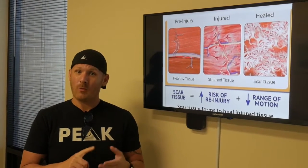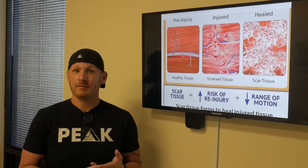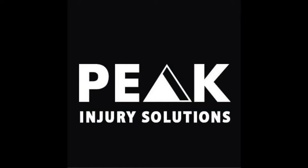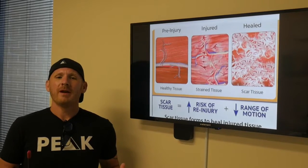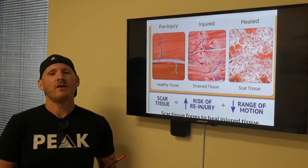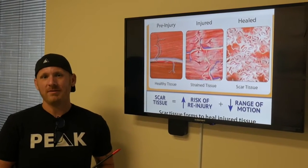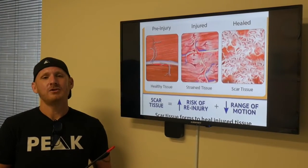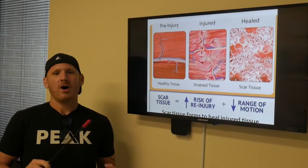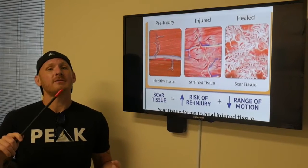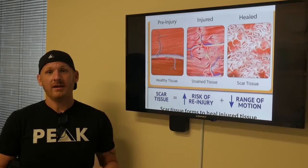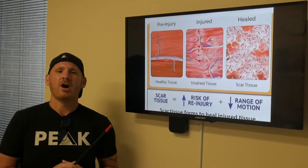Got pain, got weakness, got decreased flexibility? You probably have scar tissue. What's up everybody, I'm Dr. Matt Maggio and I am the creator of the Peak Method and the founder of the Soft Tissue Revolution. I'm on a mission to solve the pain pill epidemic and make chronic injuries obsolete. In this video, I want to talk about the most common, most underdiagnosed, and most fixable problem in the human body that's causing pain, decreased flexibility, and weakness — it's called scar tissue.